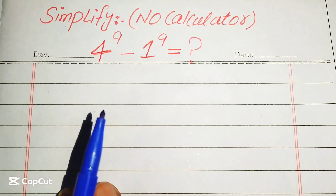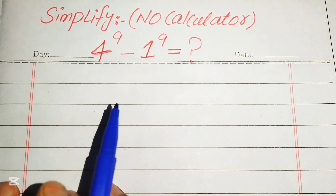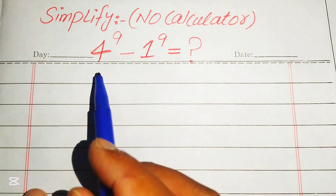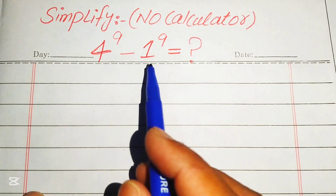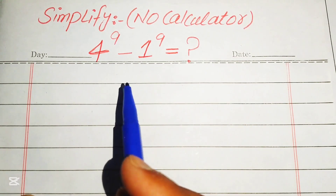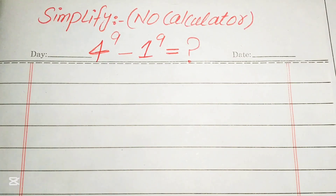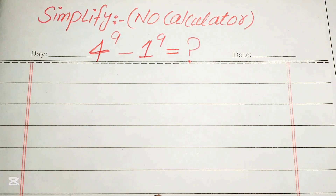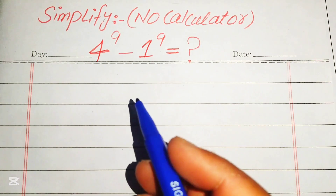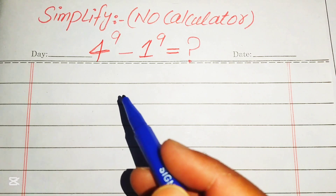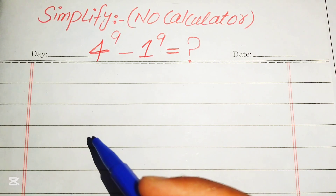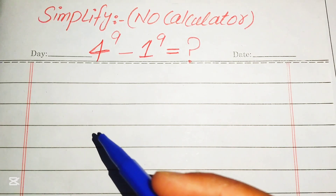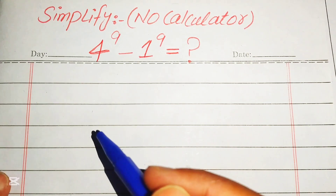Hello everyone. How to simplify this nice algebraic expression without using the calculator. So if we have 4 to the power of 9 minus 1 to the power of 9, we write this algebraic expression into the simplified form. Calculator is not allowed, so we will show all of the working on this paper.